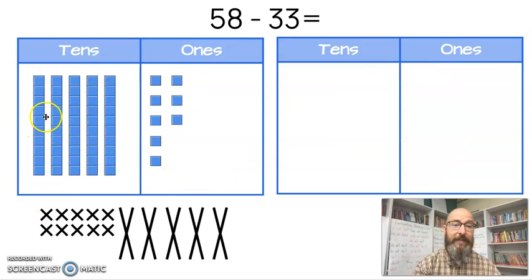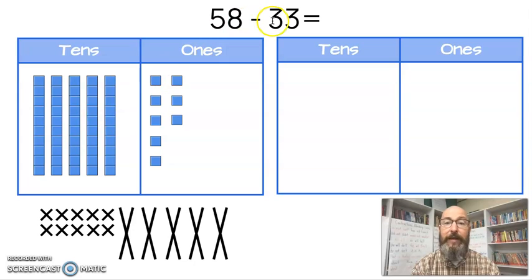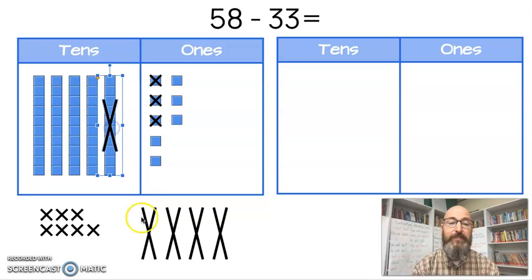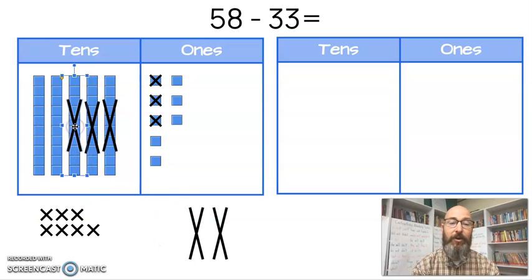So I've got my 58, 10, 20, 30, 40, 50, 51, 52, 53, 54, 55, 56, 57, 58. And I'm going to take away 33. Three tens, three ones. So I'm going to take away my three ones. Count one, two, and three. So I took away 33, 10, 20, 30, 31, 32, 33. They're gone.